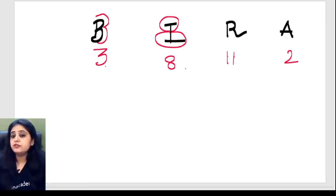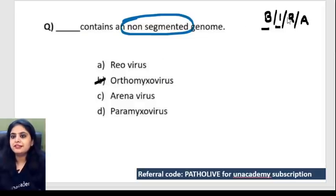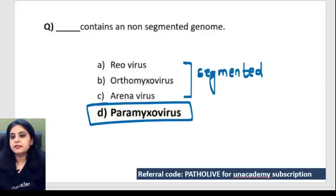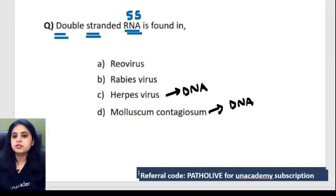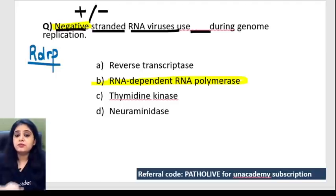Revisiting the questions with mnemonics: the non-segmented genome question — segmented ones are BIRA, so bunya, influenza/orthomyxovirus, rota/reovirus, and arenavirus are all segmented. Paramyxovirus is non-segmented. Double-stranded RNA question — all RNA viruses are single-stranded except the diarrhea one (rotavirus/reovirus), which is double-stranded.